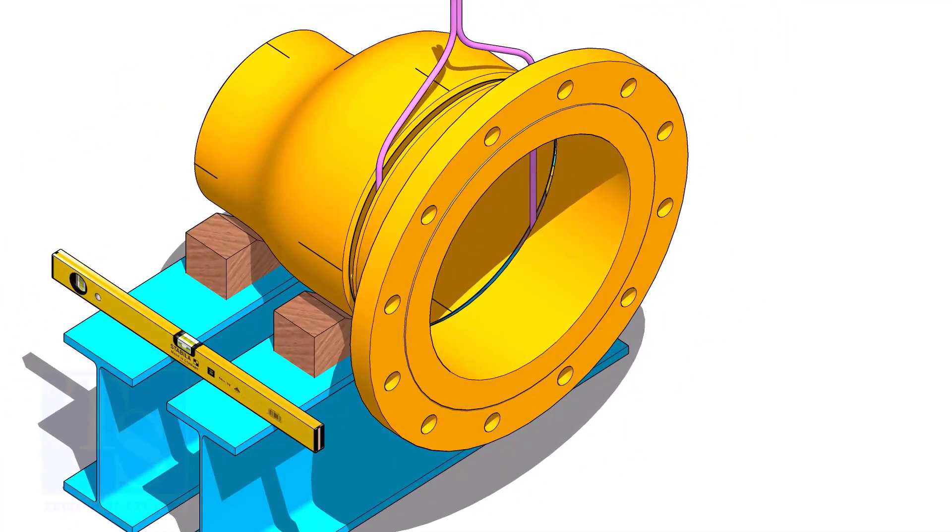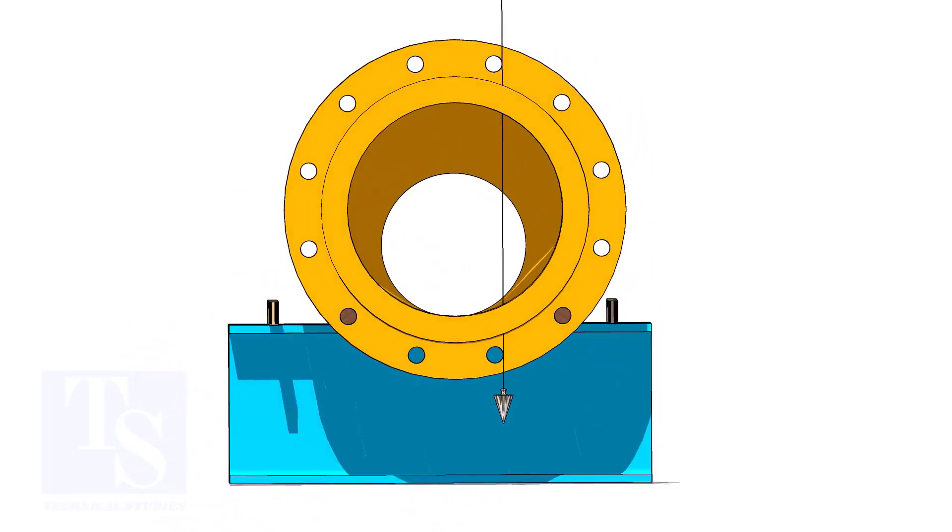Put flange in the gap rod. Arrange proper supports below the flange. Plumb the flange through the holes as shown.